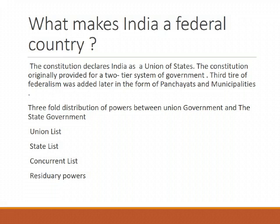The Union List includes subjects of national importance such as defence of the country, foreign affairs, banking, communication, and currency. They are included in this list because we need a uniform policy on these matters throughout the country. The Union Government alone can make laws relating to subjects mentioned in the Union List.